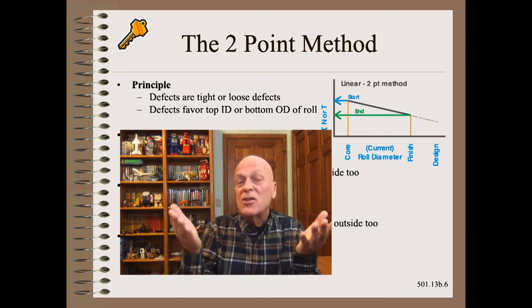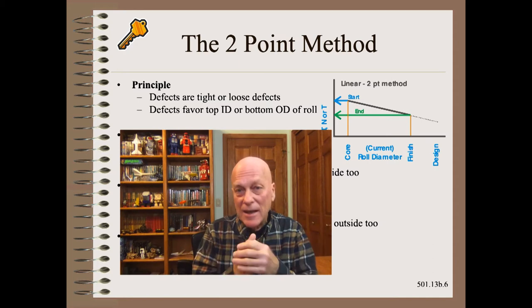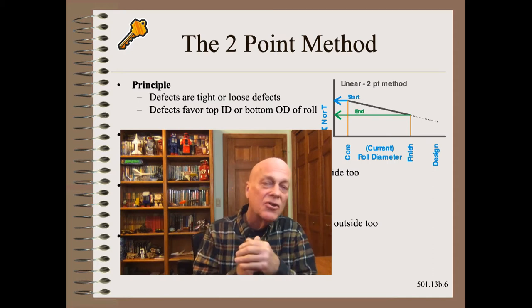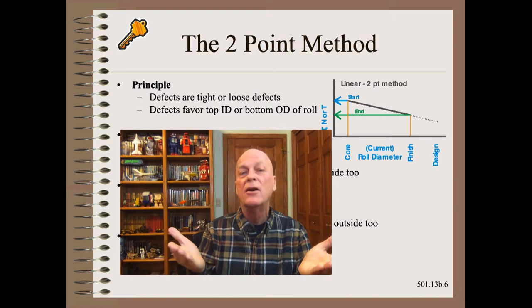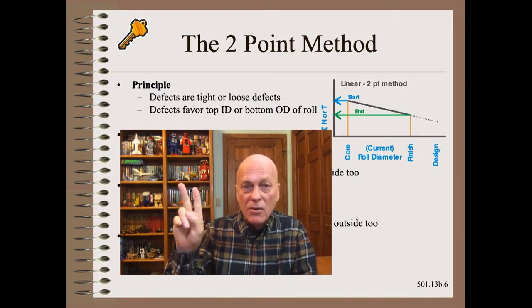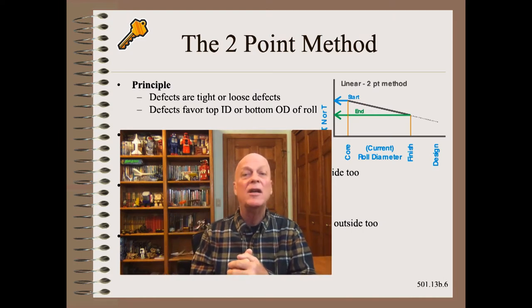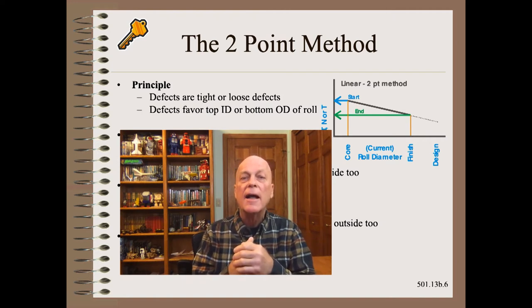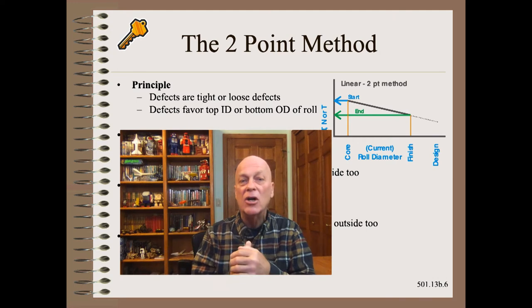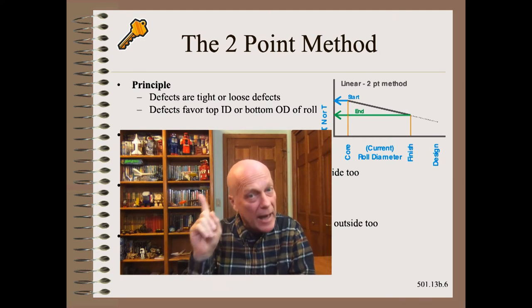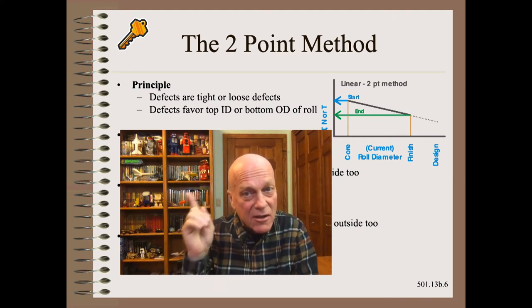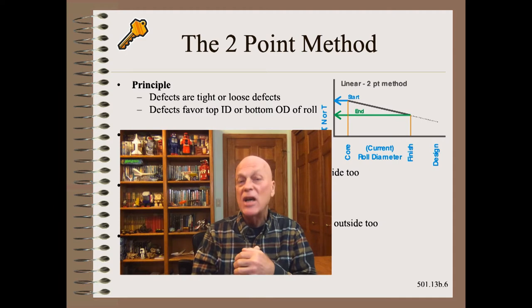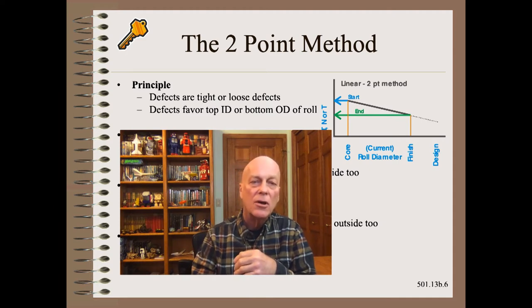Let us simplify everyone's life and state that for the great majority of cases you can do quite fine with the two-point method shown here, which is becoming near universal for winder controls. There you can adjust the starting and ending value — in calibrated engineering units, of course — of tension, nip, and torque.